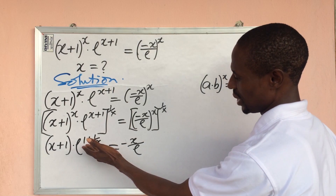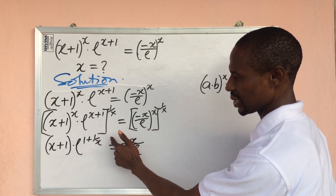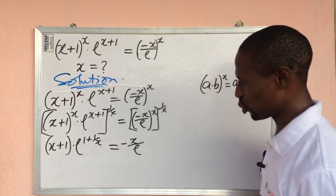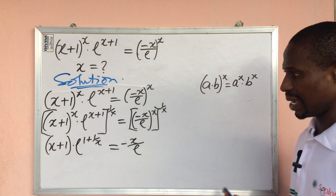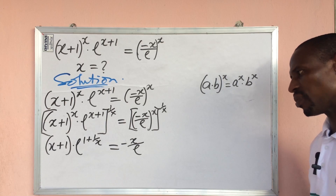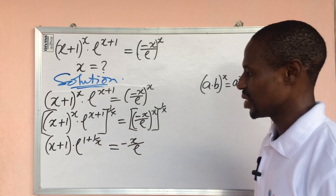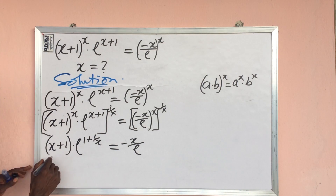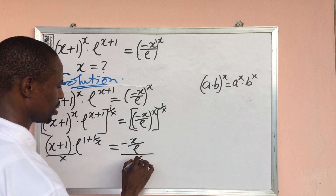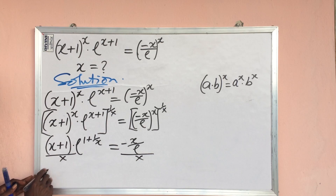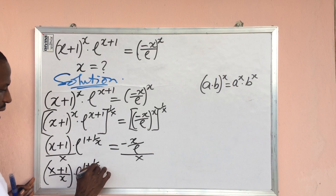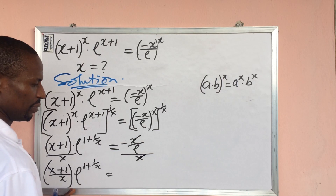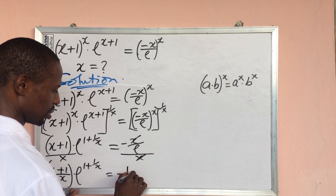Let's look at what we have at this exponent: e is raised to 1 plus 1 over x, and we also have the variable at the base. Trying to multiply both sides by e gave trouble, so instead we divide both sides by x. Dividing gives us x plus 1 all over x, times e to the power of 1 plus 1 over x, equal to minus 1 all over e.